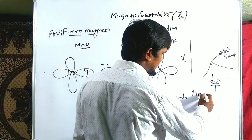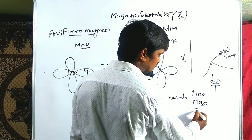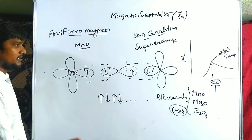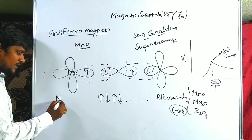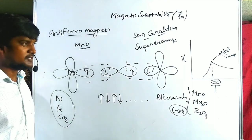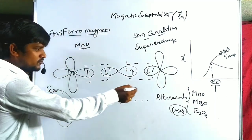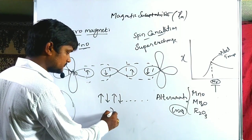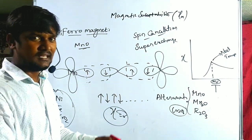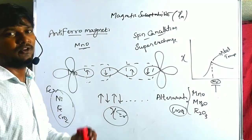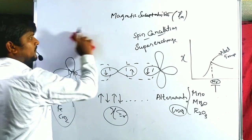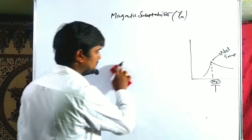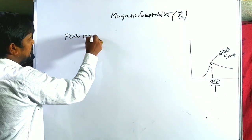These are the examples regarding antiferromagnets. Due to the spin cancellation, the magnetic susceptibility is almost equal to zero — meaning much less magnetic susceptibility compared to ferromagnets. Now let us go through the third one: ferrimagnetic species.